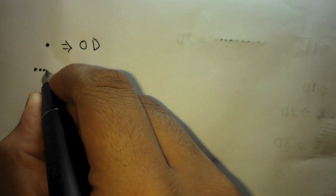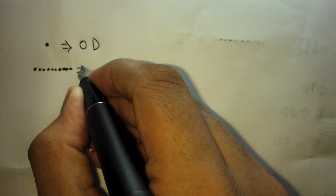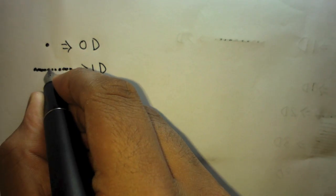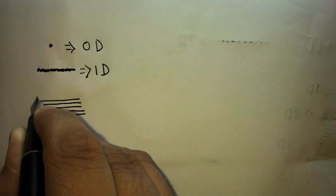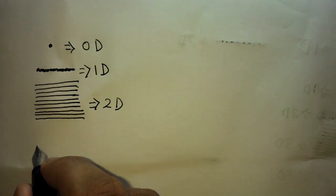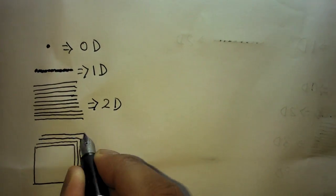Didn't understand? Fine. Let's take a point. A point is zero dimensional. A collection of points gives us a line, which is one dimensional. A collection of lines gives us a square, which is two dimensional. A collection of squares gives us a cube, which is three dimensional.